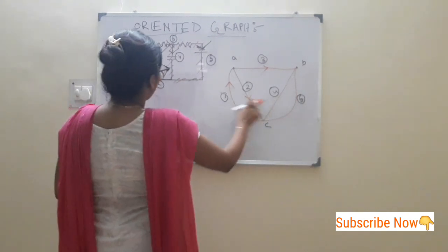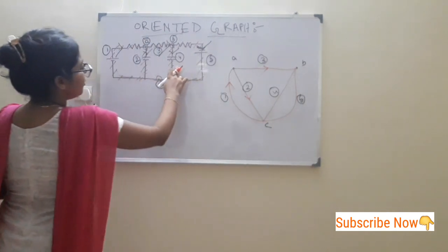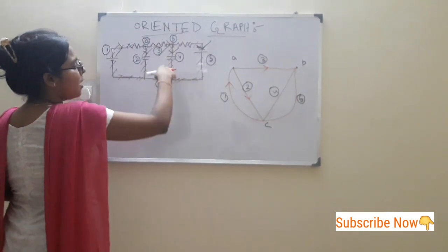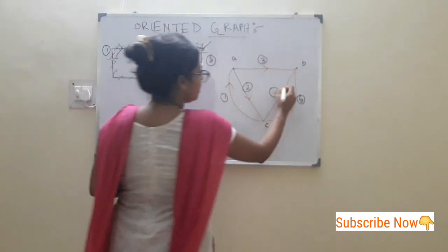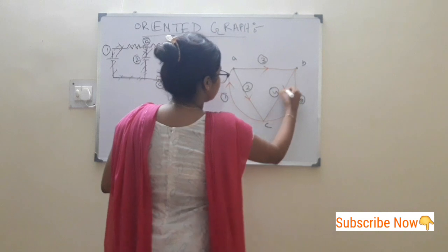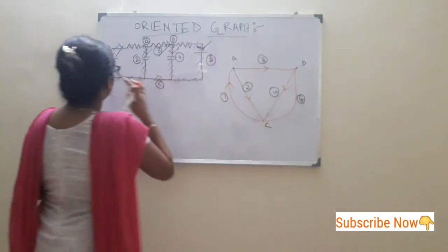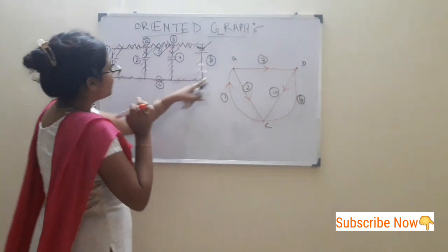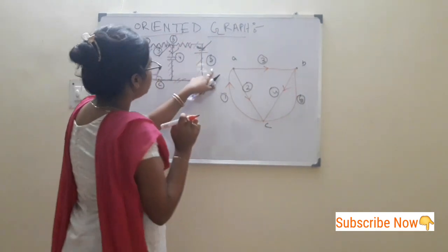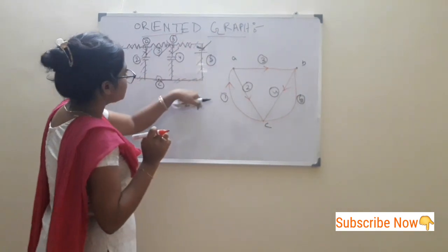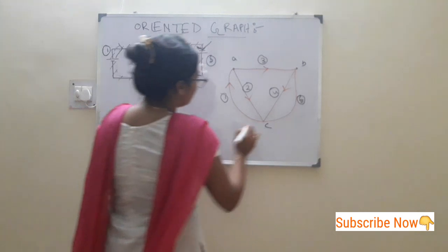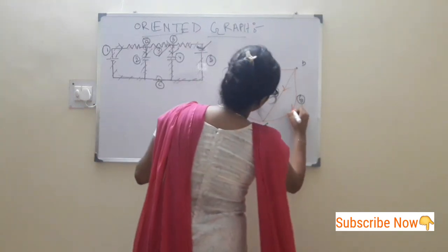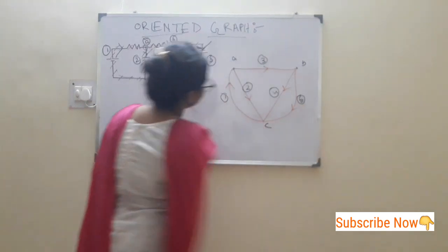For branch 4, the orientation is the downwards orientation, like this. And for branch 5, the orientation is also downwards orientation, like this.